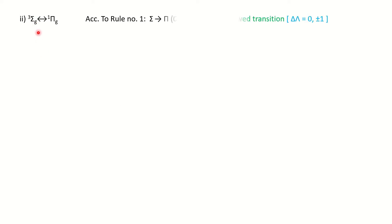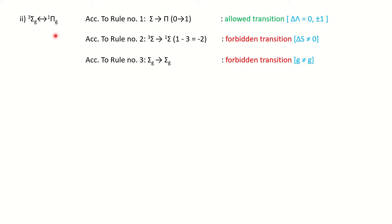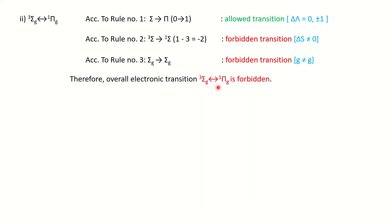Problem 4, transition (b): ³Σg⁺→¹Πg. Rule 1: Σ→Π (0→1, Δλ=1) — allowed. Rule 2: triplet to singlet (ΔS=2) — forbidden. Rule 3: g→g — forbidden. Since Rules 2 and 3 are violated, the overall transition is a forbidden transition.